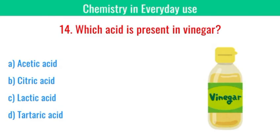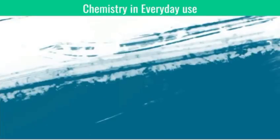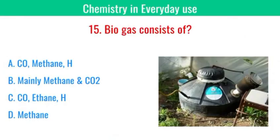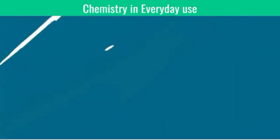Which acid is present in vinegar? The answer is acetic acid. Biogas consists of? The answer is methane and CO2.